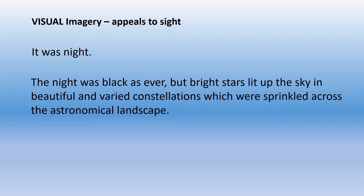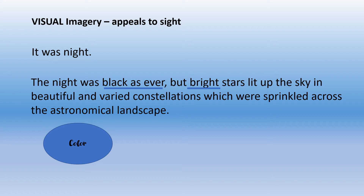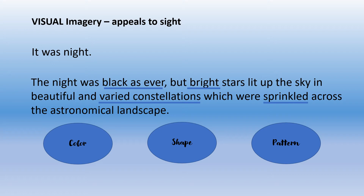This is what we call visual imagery — an image that appeals to the sight or describes what we see. With this example, it helped us see the image or directly experience what the narrator sees through the narrator's eyes. The experience of the night sky is described in depth: with color, through stating 'black as ever' and 'bright'; shape, by stating 'varied constellations'; and even pattern, through the word 'sprinkled.' Visual imagery may include color, shape, and pattern.